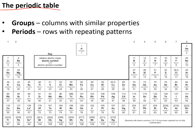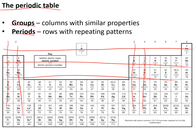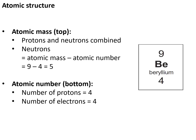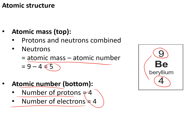The periodic table is arranged in groups and periods. Groups are the columns — 1, 2, 3, 4, and so on — and periods are the rows — 1, 2, 3, and so on. Note that hydrogen does not belong in any group. Each element has two numbers: the atomic mass at the top and the atomic number at the bottom. The atomic number tells us the number of protons and electrons — for beryllium that is 4. The atomic mass tells us the number of neutrons: atomic mass minus atomic number, so 9 minus 4 gives us 5 neutrons.